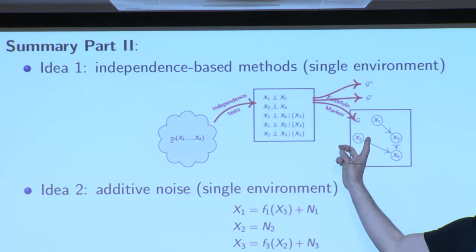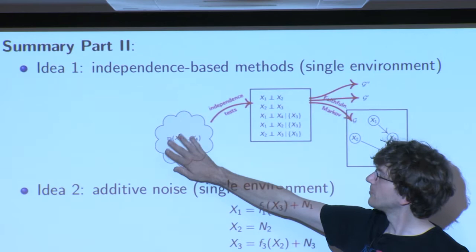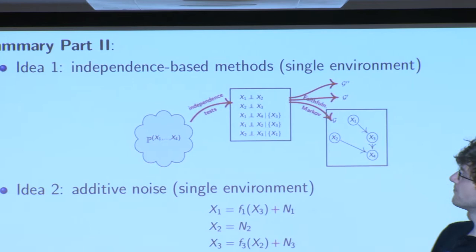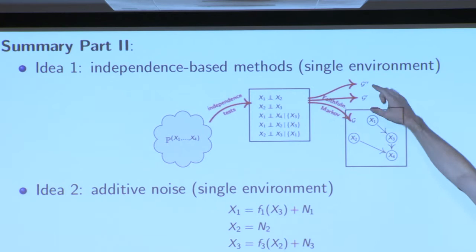The idea was to say, we have a joint distribution, we look at all the independence statements that hold, and then we can relate this to the graph. This can be done in a clever way, and in many cases we can only identify a certain non-trivial class of graphs. This was called the Markov equivalence class.